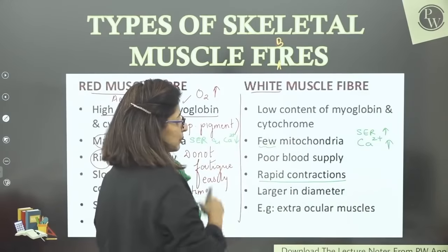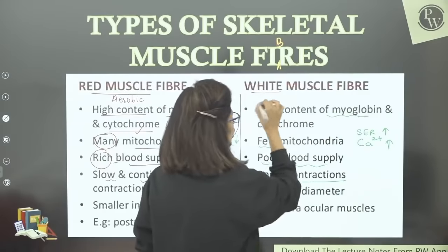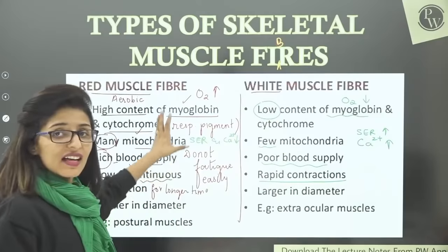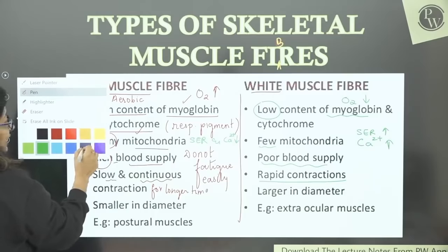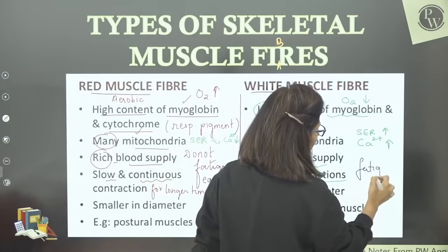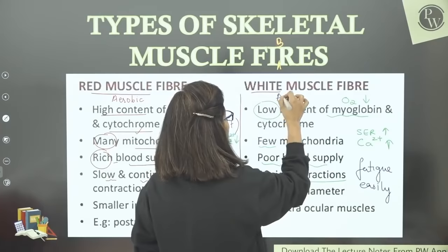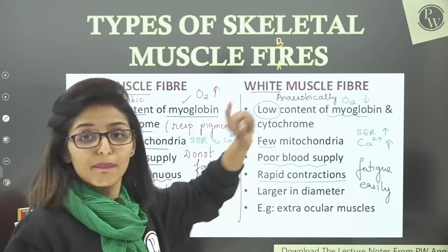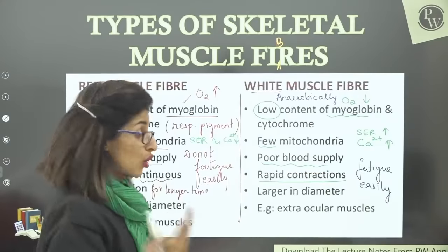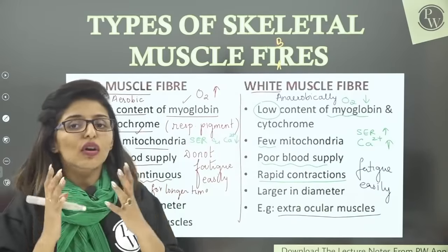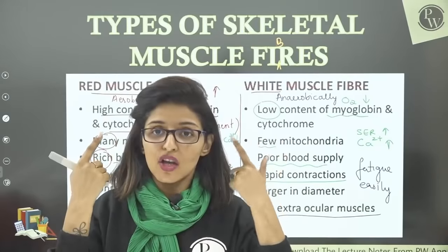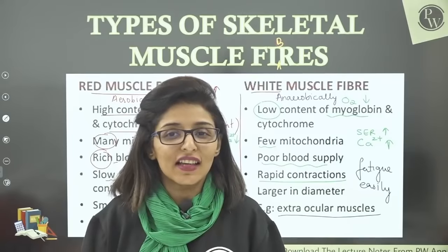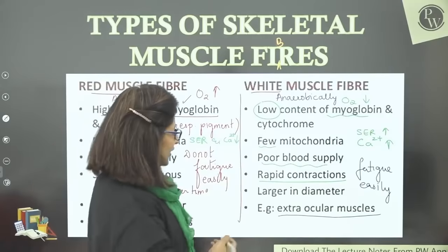White muscle fibers have fewer mitochondria, relatively poor blood supply, and low myoglobin content — so less oxygen. All these features are contrasting to red fibers. This means white muscle fibers will fatigue easily and respire anaerobically very quickly, producing lactic acid quickly. Examples of white muscle fibers: extra-ocular muscles. 'Ocular' relates to the eyeball; extra-ocular muscles move the eyeball. Eyes tire quickly from excessive reading — that's from white muscle fibers.